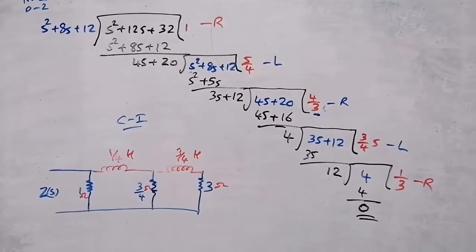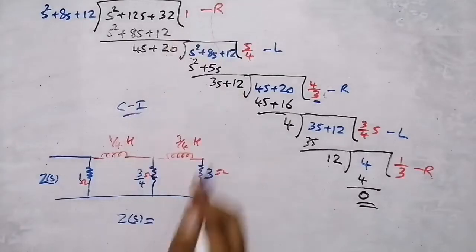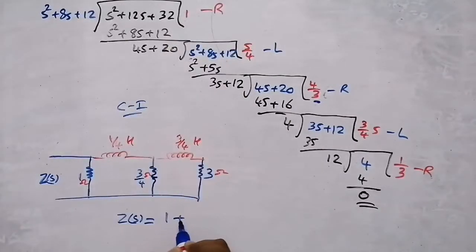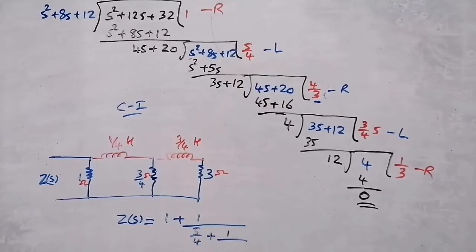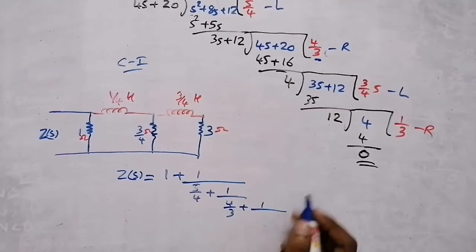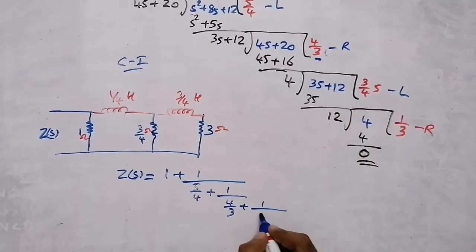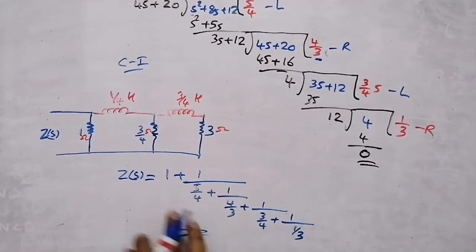The Cauer 1 network can also be written in continued fraction format: Z(s) = 1 + 1/(s/4 + 1/(4/3 + 1/(3/4 + 1/(1/3)))).